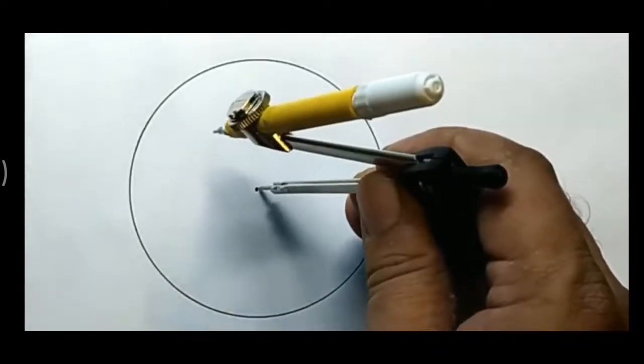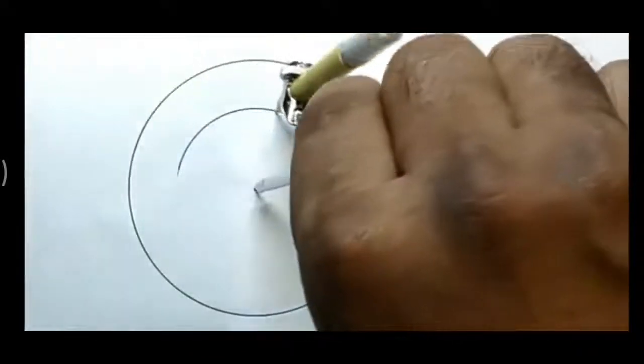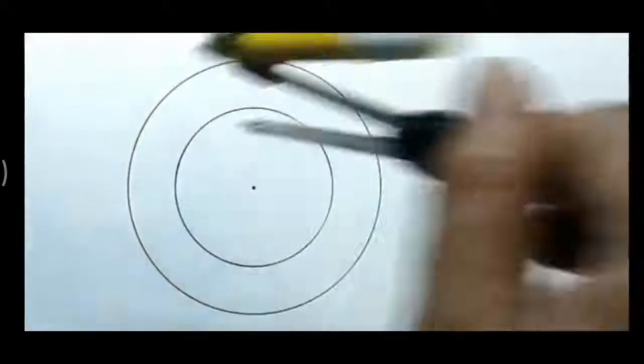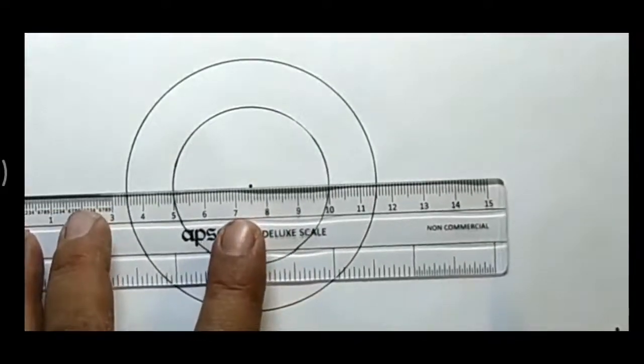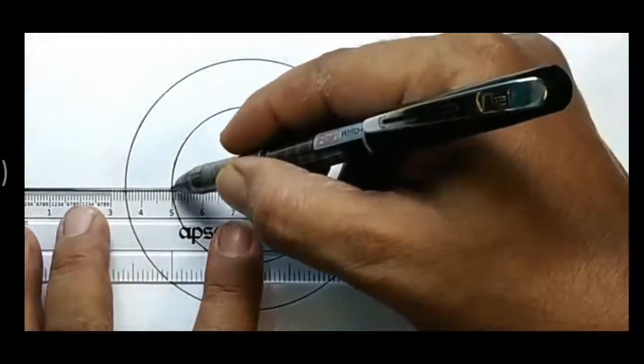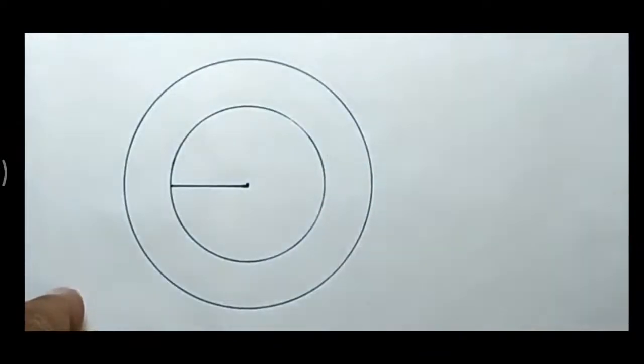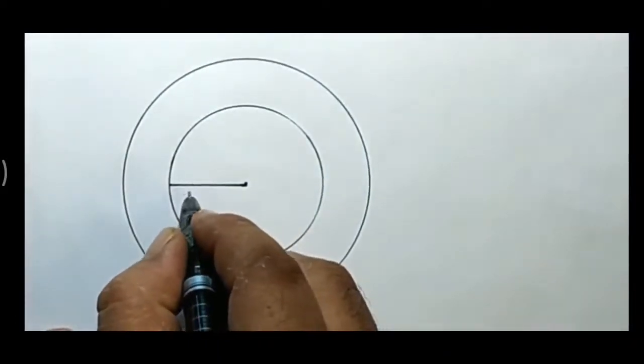After that, you are required to take 2.5 cm radius in your compass. I am taking 2.5 cm in the compass. After taking 2.5 cm, put the needle of the compass on the same center and draw a circle of 2.5 cm. This is the circle of radius 2.5 cm I have drawn. With the same center, I have drawn two circles. Now draw the radius — the interior radius is 2.5 cm.